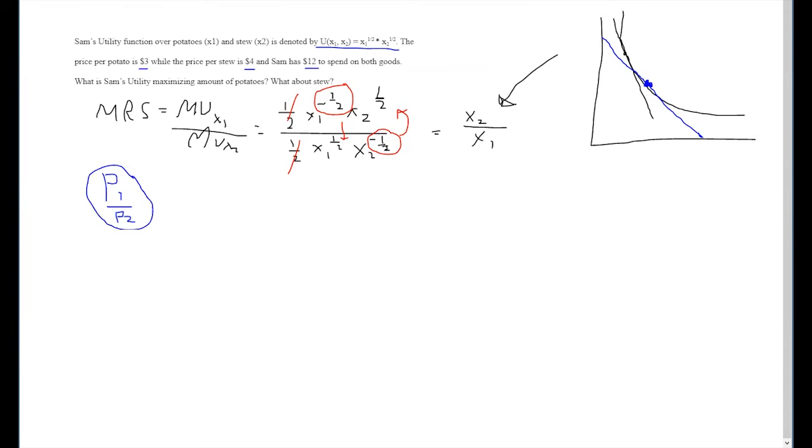p1 over p2, and this MRS, or slope of our utility curve at that point, equate to each other.